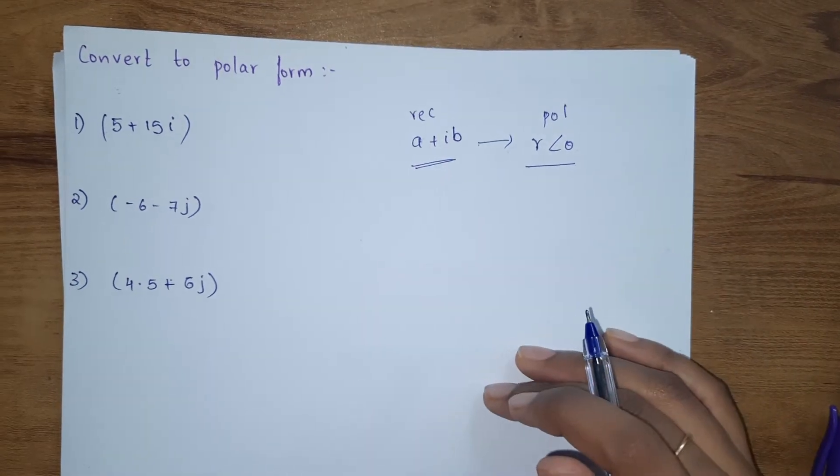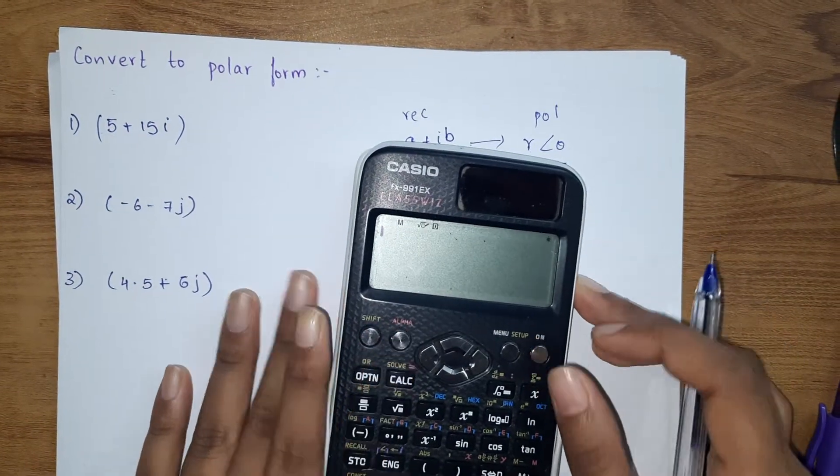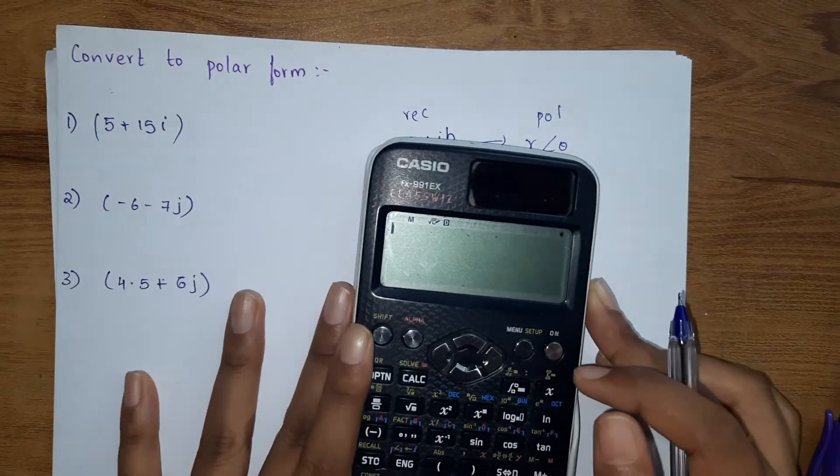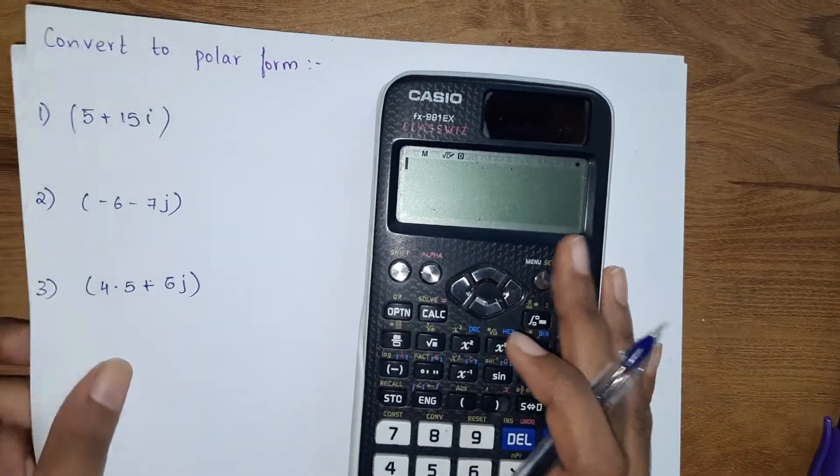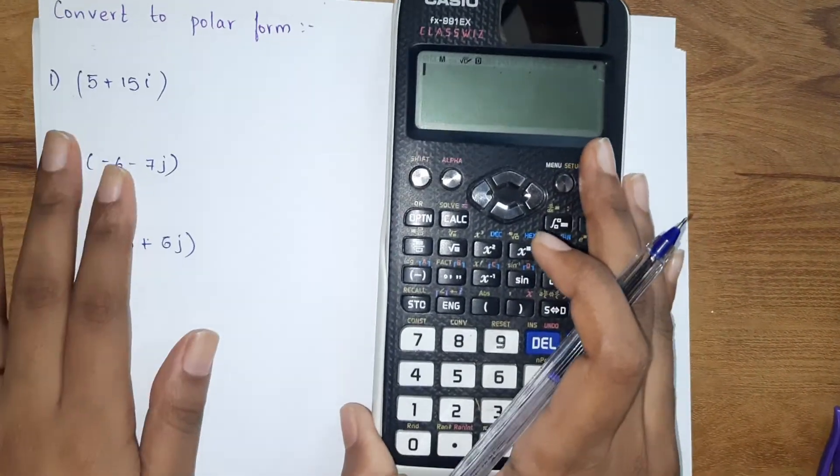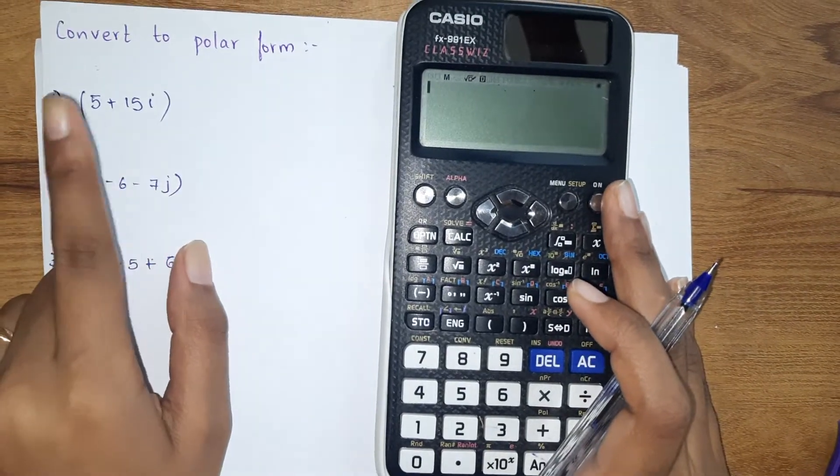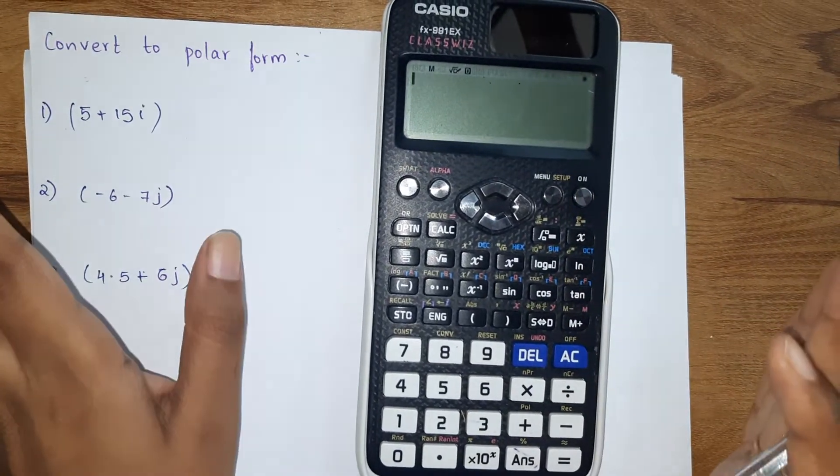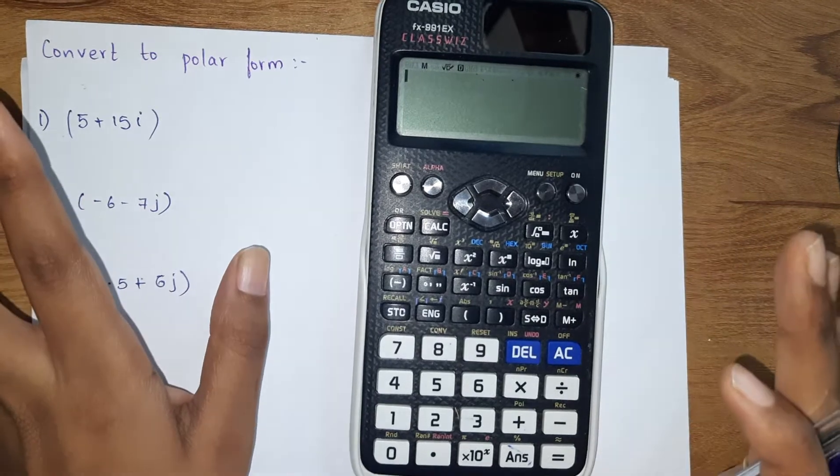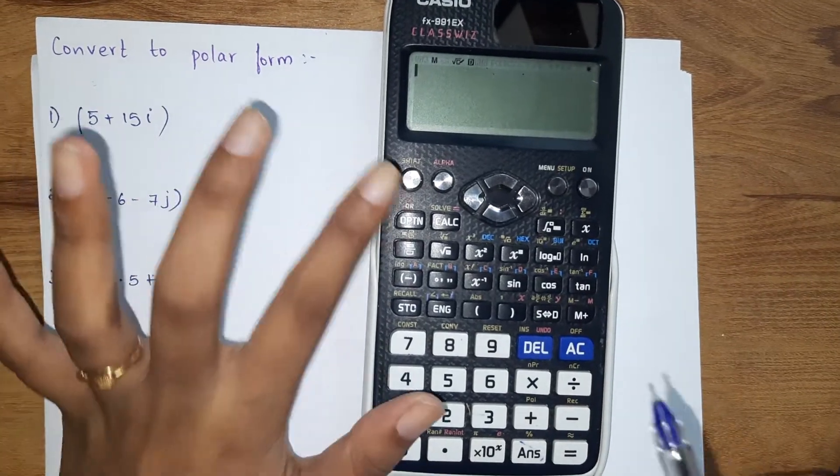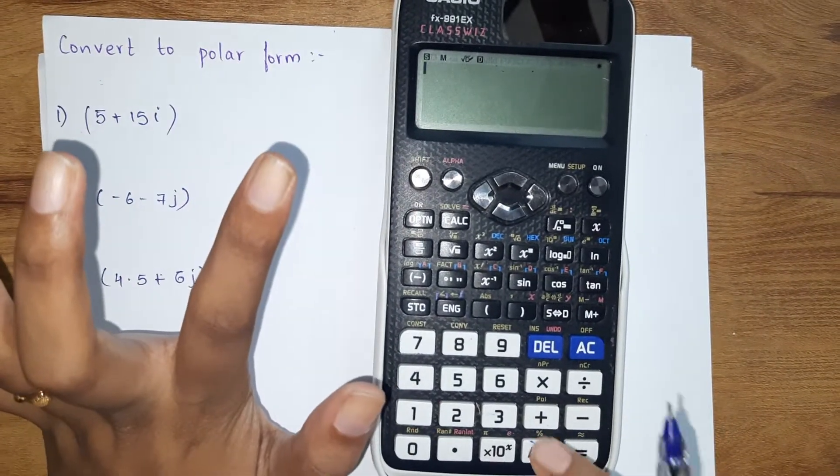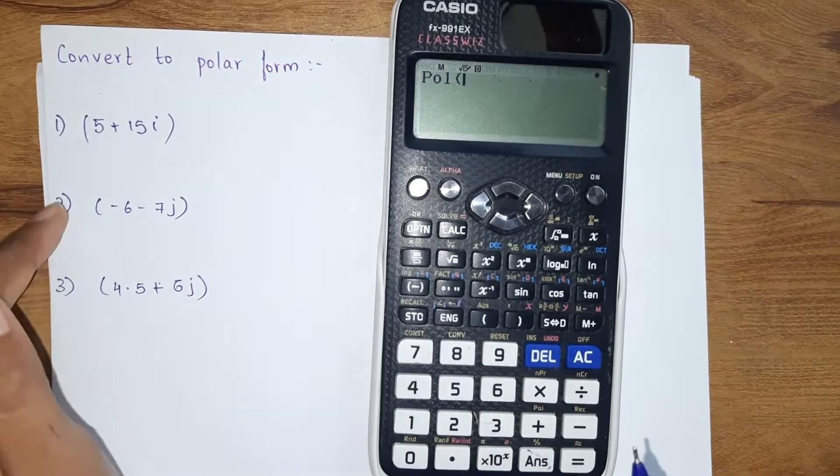We're using our Casio calculator fx-991EX calculator. Let's start with our first question: 5 plus 15i. Same thing we did in the previous video - shift pole.